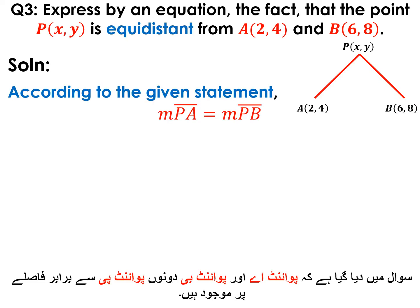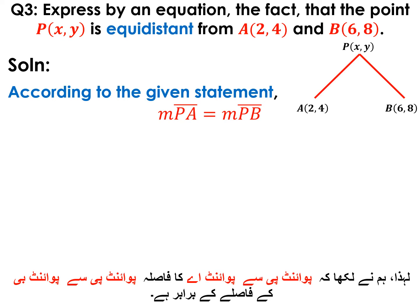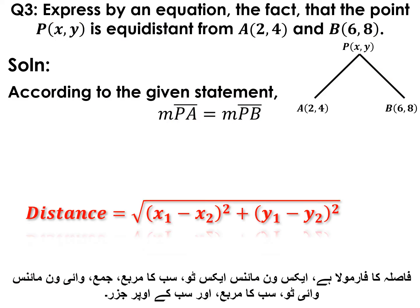According to the given statement, as points A and B are equidistant from point P, we write: the distance from point P to point A is equal to the distance from point P to point B. The distance formula is: √[(x₁ − x₂)² + (y₁ − y₂)²].